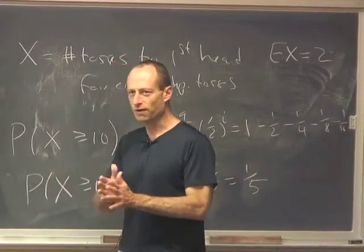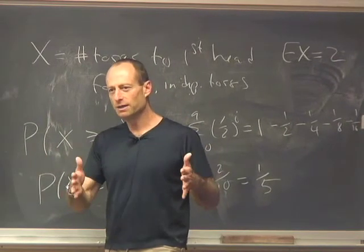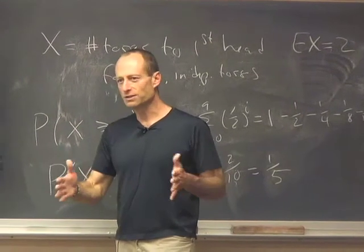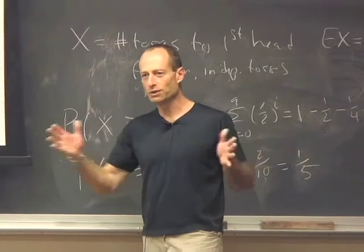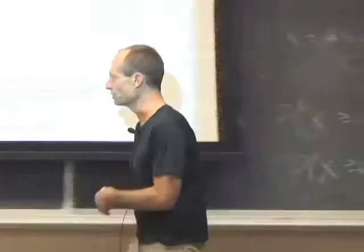For lists, it says the fraction of values in the list that are more than k standard deviations from the mean is at most 1 over k squared. For random variables, it says the probability that the random variable is more than k standard errors away from the expected value is at most 1 over k squared.